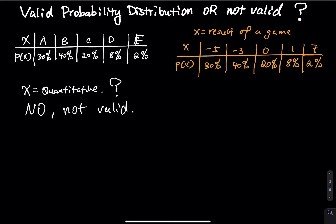Let's say I have a box with many cards inside. Each card has a number written on it. You reach your hand into the box and grab one card out. What is the probability that you get a negative five? What is the probability that you get a negative three? The probability distribution is right there. First of all, they add up to 100%.